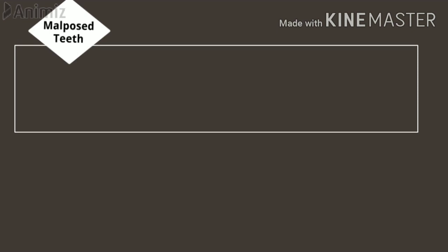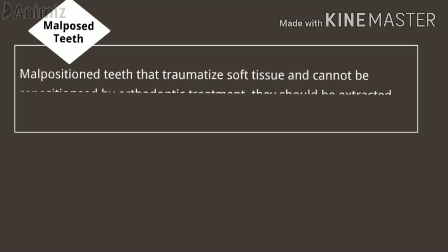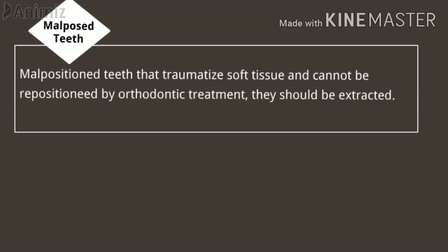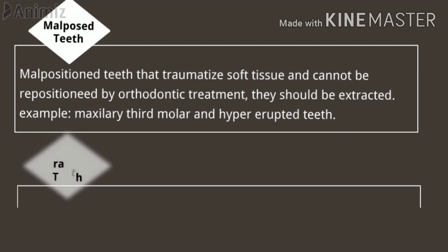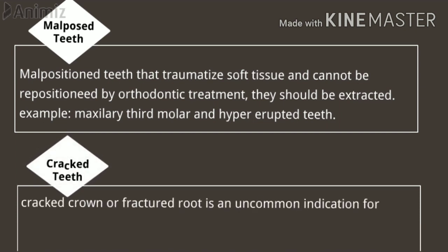Malposed teeth — the tooth which is not in the correct position, correct size, or correct shape — are malposed or malpositioned teeth. This is an indication in several situations: if they are traumatizing soft tissues and cannot be repositioned by orthodontic treatment, such teeth are indicated for extraction. The most common example is the maxillary third molar which erupts in buccal version, traumatizing the cheek and causing ulceration. Another example is hyper-erupted teeth due to loss of teeth in the opposing arch.